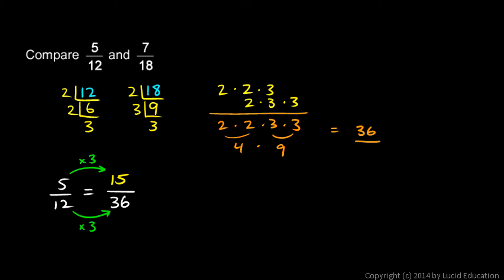Now 7-eighteenths will do the same thing. We'll write 7 over 18, and we'll write this as a fraction that's equal to 7 over 18, but which has 36 in the denominator. And 18 times what is 36? 18 times 2.